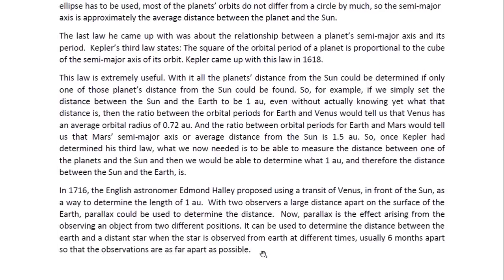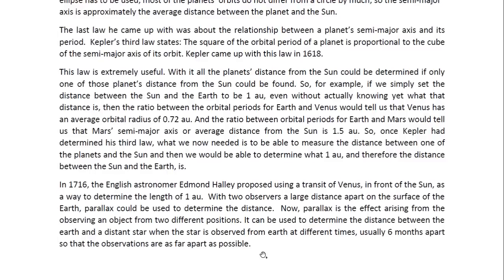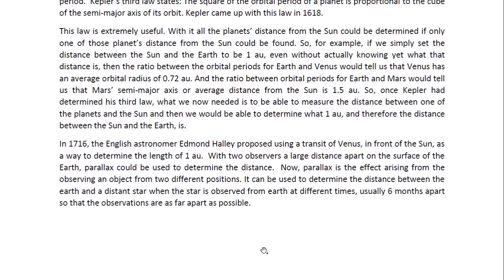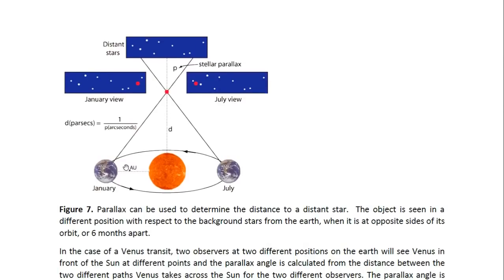Now, in 1716, the English astronomer Edmund Halley proposed using a transit of Venus in front of the sun as a way to determine the length of 1 AU. With two observers a large distance apart on the surface of the earth, parallax could be used to determine the distance. Now, parallax is the effect arising from observing an object from two different positions. It can be used to determine the distance between the earth and the distant star when the star is observed from earth at different times, usually six months apart, so that the observations are as far apart as possible. This is all illustrated here.